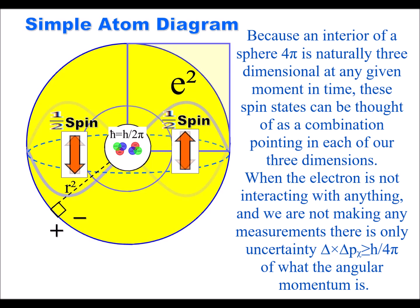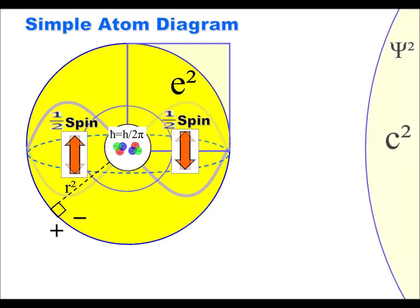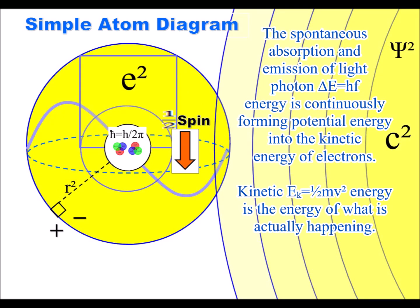When the electron is not interacting with anything, and we are not making any measurements, there is only uncertainty of what the angular momentum is. The diagram represents light photon energy interacting with the electron.